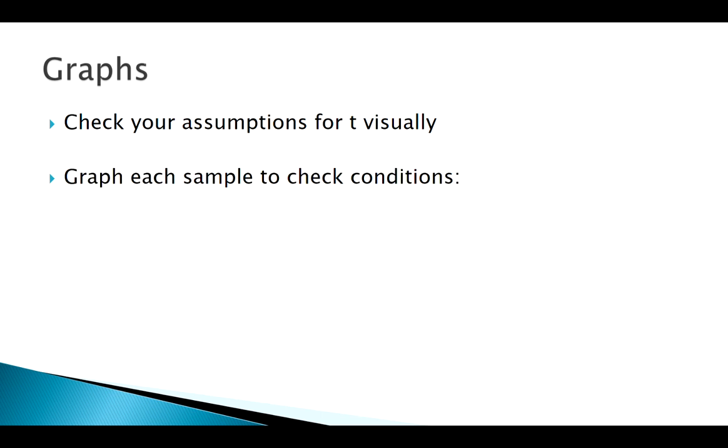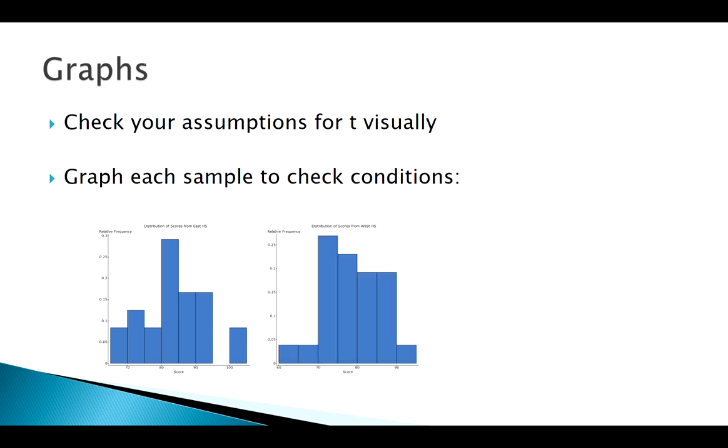So remember we have to check our assumptions for both groups. We're going to check these visually using our simple graphs. My first group, this is East High School. It doesn't look perfectly normal, but we don't see extreme skewness. Again, West High School, not great, but we don't see anything extreme that really concerns us. And we don't see outliers on our box plots comparing the two. So I think we're in good shape to use our T distribution.